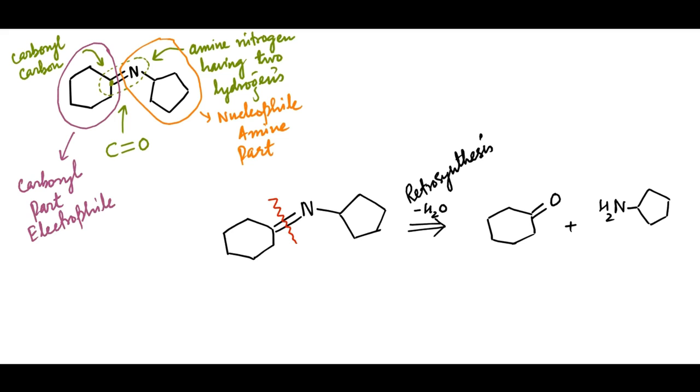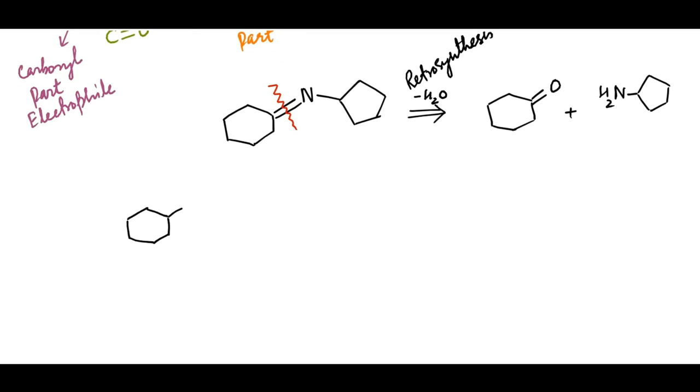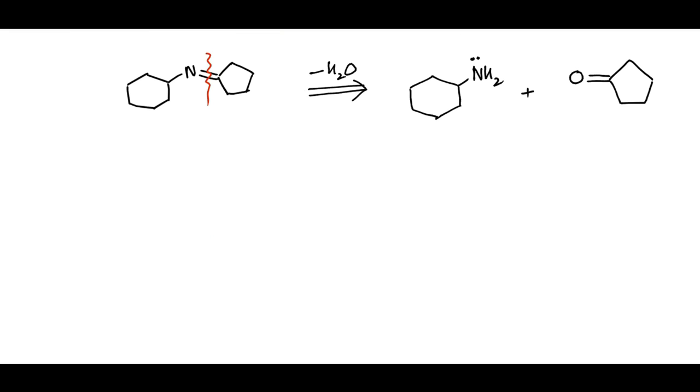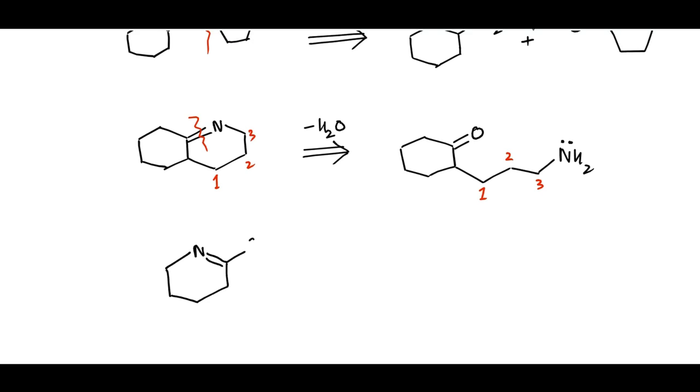Likewise retrosynthetic analysis of this imine gives cyclohexylamine and cyclopentanone. This cyclic imine depicts intramolecular imine formation. Retrosynthetic analysis gives this cyclohexanone with aminoalkyl chain at alpha carbon. The carbons can be traced, denoted with numbers. Similarly in this cyclic imine retrosynthesis can be done like this. Carbons can be denoted C1, 2, 3, 4, 5, 6.